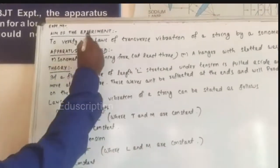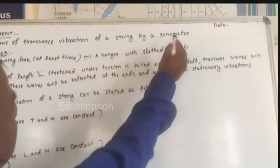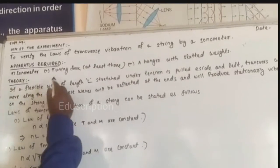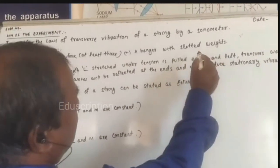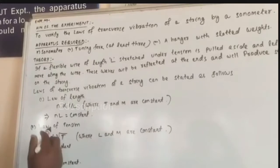The aim of the experiment is to verify the laws of transverse vibration of a string by sonometer. Apparatus required are sonometer, tuning fork at least three, a hanger with slotted weight. In this experiment we will use 500 gram slotted weight.